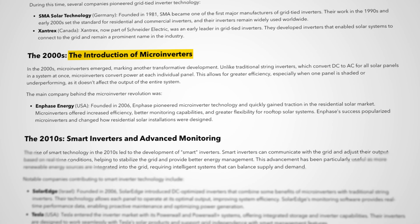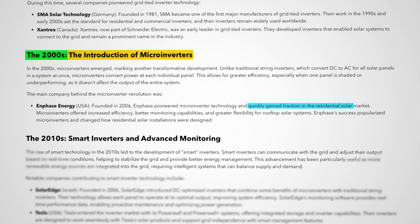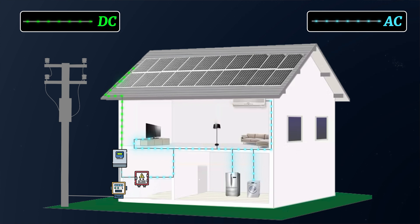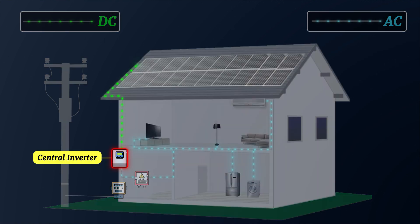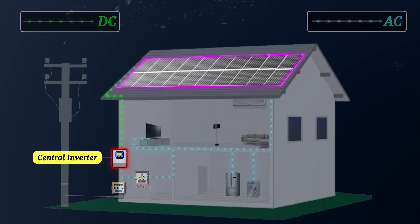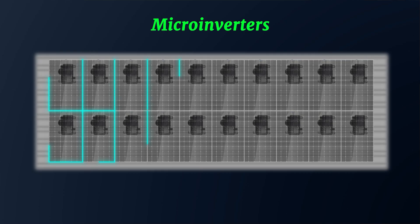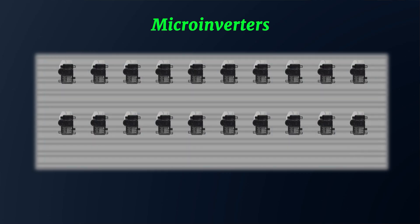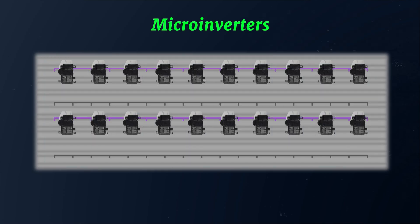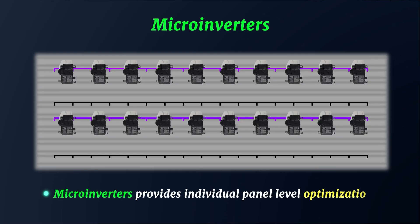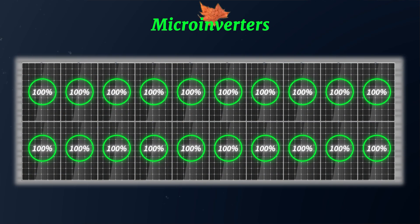To address this problem, microinverters entered the market in the early 2000s as a game-changing solution. Rather than relying on a single central inverter mounted on the side of the house and connecting panels in strings on the roof, microinverters assigned an individual inverter to each individual solar panel. These microinverters are attached to the racking system behind each panel, therefore also providing panel-level optimization and monitoring. With microinverters, the issue of one panel's performance affecting the other panels has been eliminated, boosting the overall efficiency of the system.